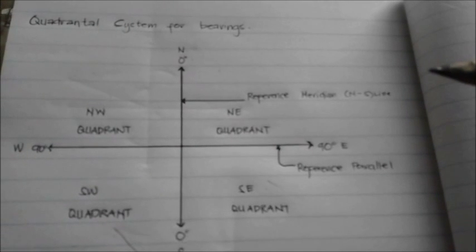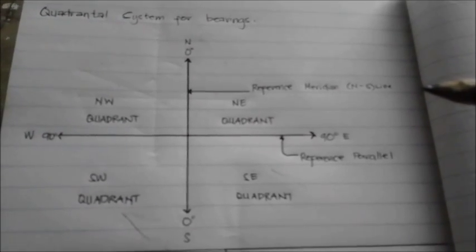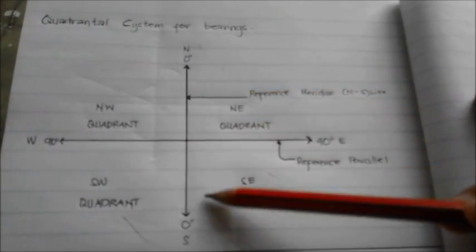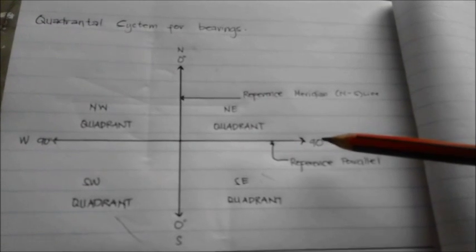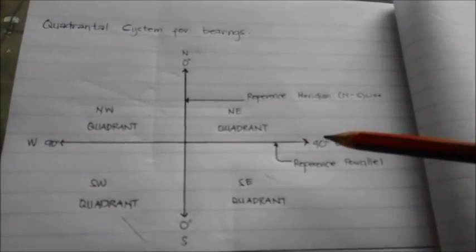Bearing. A direction of a line may be described by giving its bearing. The bearing of a line is the acute horizontal angle between the reference meridian and the line. A quadrantal system is used to specify bearings such that a line may fall under one of the following quadrants.